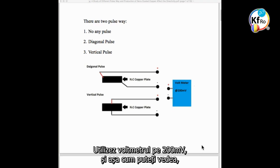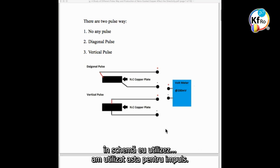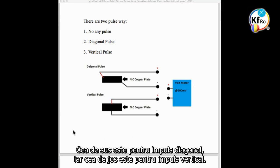I use the voltmeter to be 200 millivolts. As you can see in the diagram, I use the poles. The top is diagonal poles and the bottom is vertical poles. So can you go down?